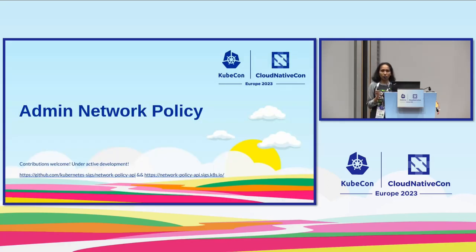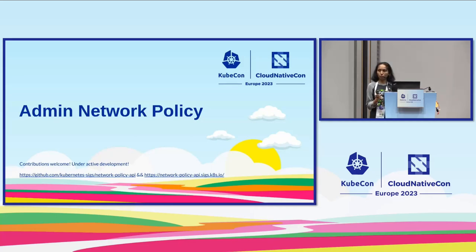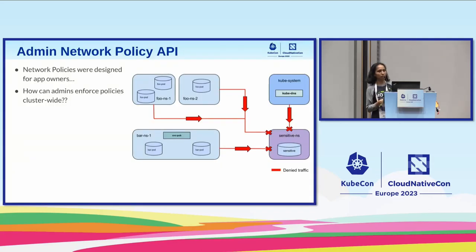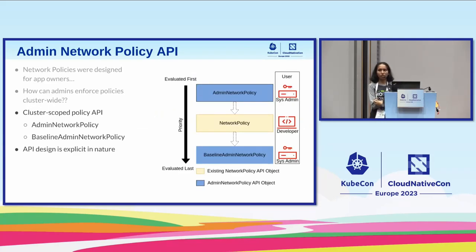Administrators in a cluster need to enforce stricter rules that are non-overridable by namespace owners' policies. That's why we have the Admin Network Policy API in SIG Network's network policy API working group. It's relatively new — around for almost just a year, merged a year ago — and the API repo lives out of tree. If you're a cluster administrator and want to express cluster-scoped rules, like saying a sensitive namespace should not receive traffic from any namespace in the cluster, you can express that easily using admin network policy.